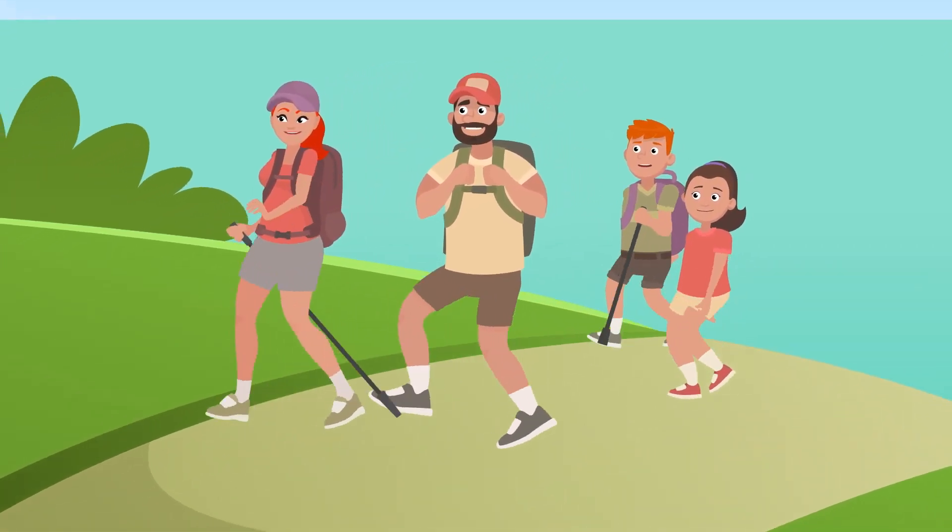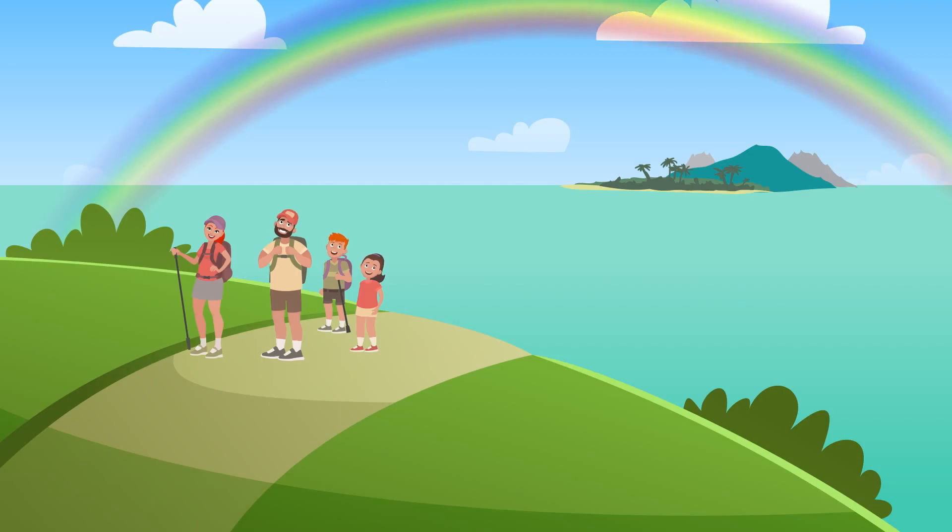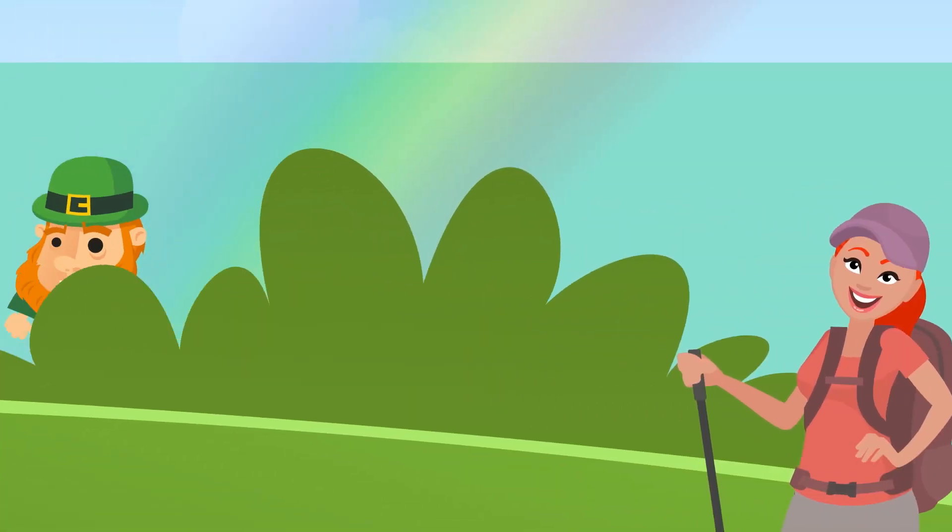Seeing a rainbow is all about reflecting light at just the right angle, so its location looks different depending on where you're standing. So next time you happen to catch a glimpse of a rainbow, just enjoy it and leave the gold for the leprechauns.